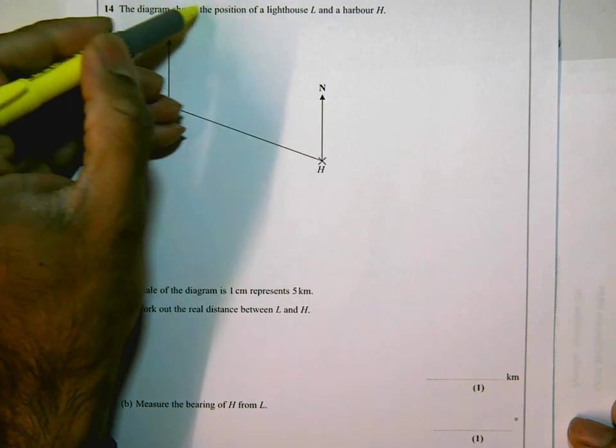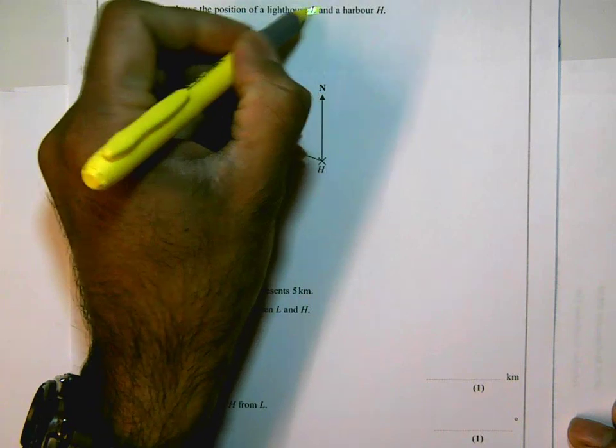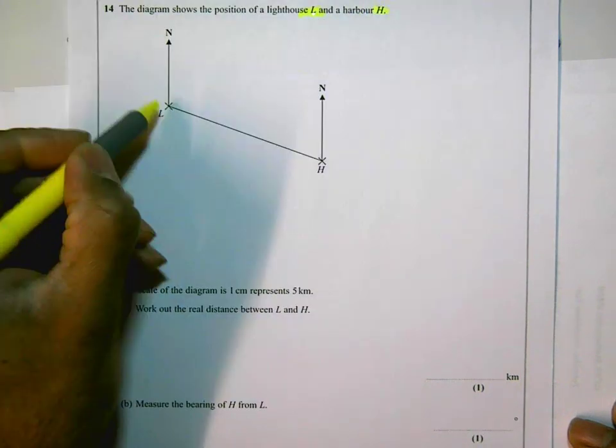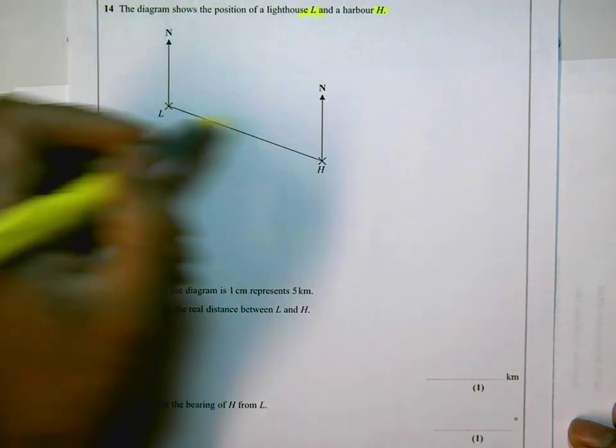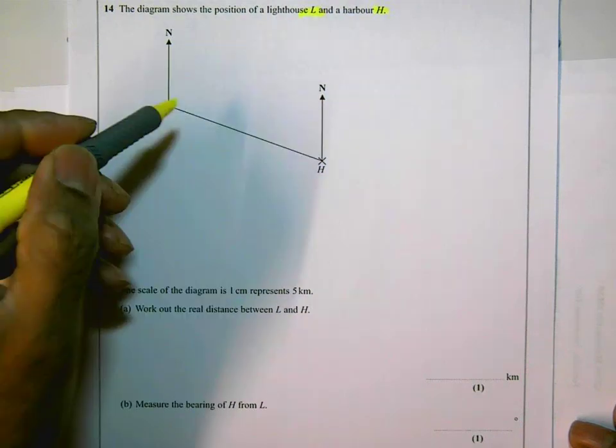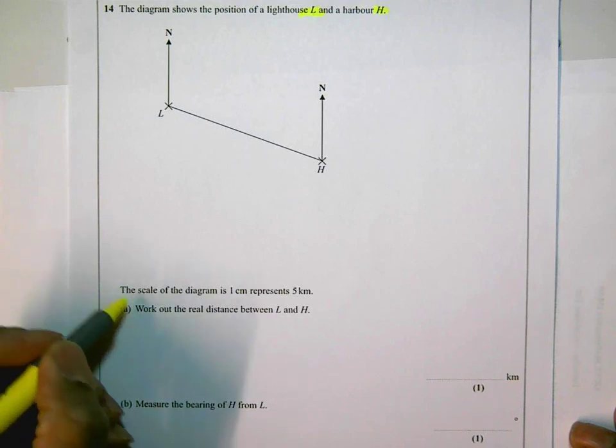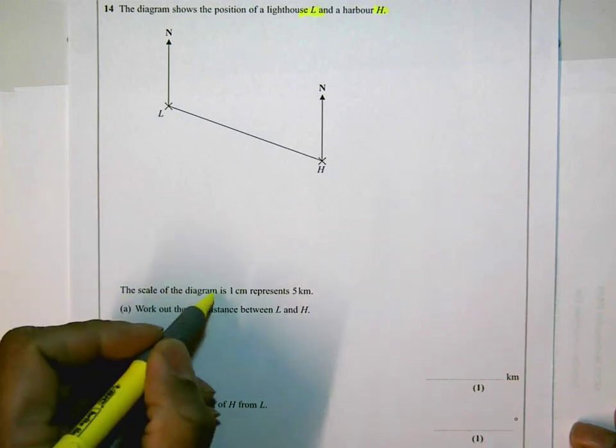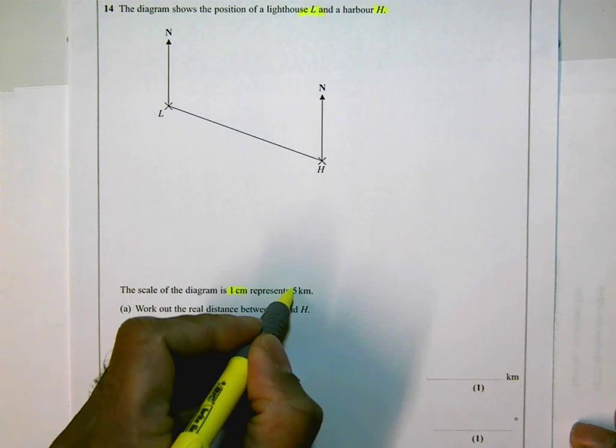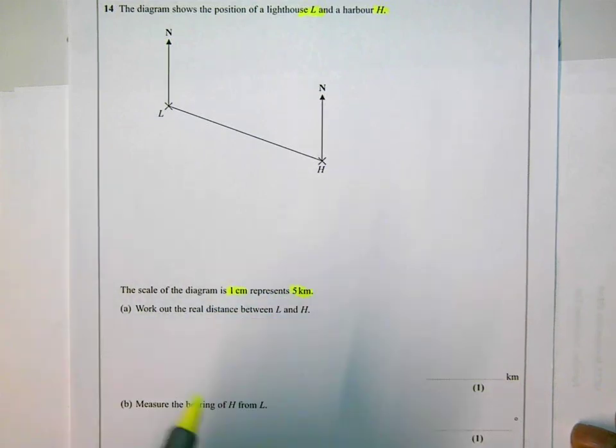Let's read the question first. The diagram shows the position of a lighthouse L and a harbor H. That's the lighthouse, that's the harbor. I can tell straightaway this is going to have something to do with bearings. It's got the north lines and these two are connected. The scale of the diagram is one centimeter represents five kilometers, so one centimeter is five kilometers.